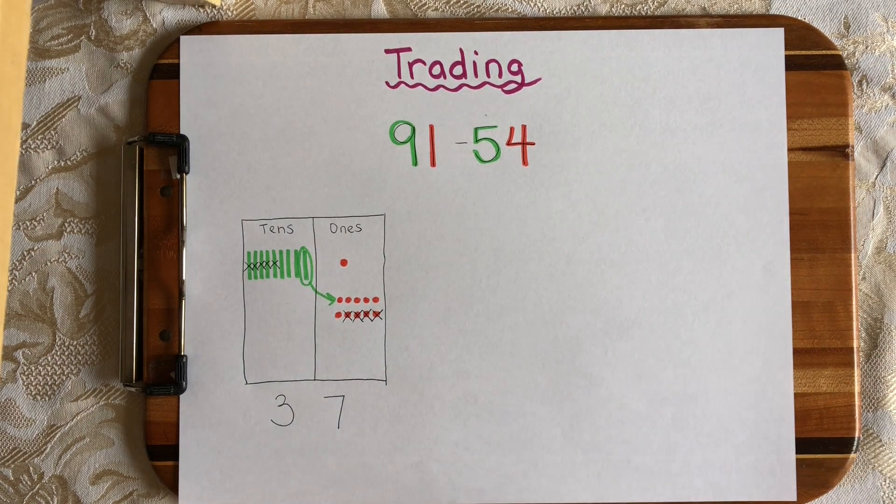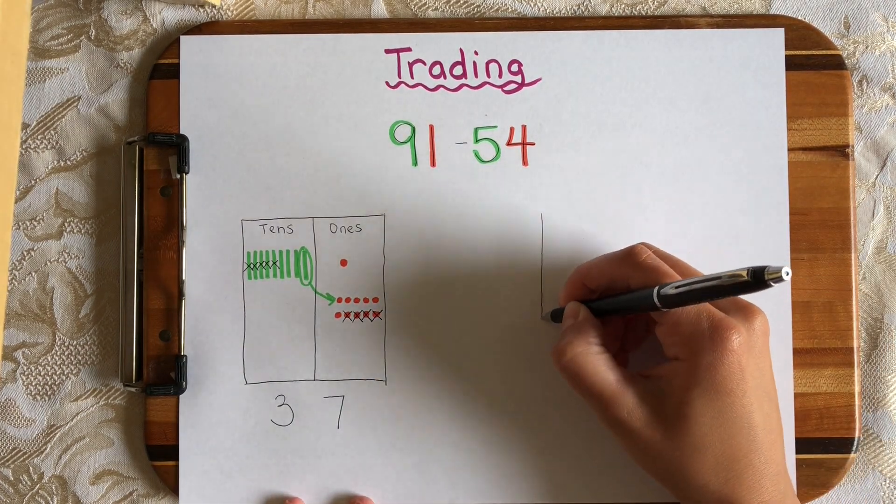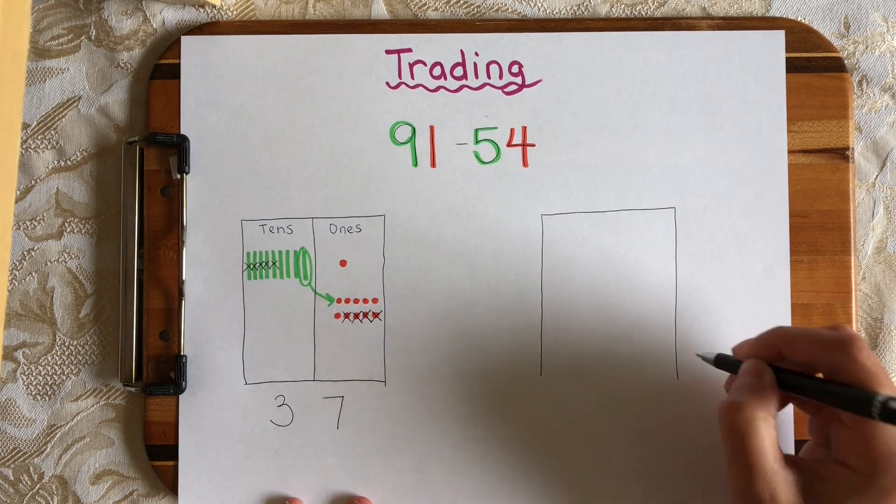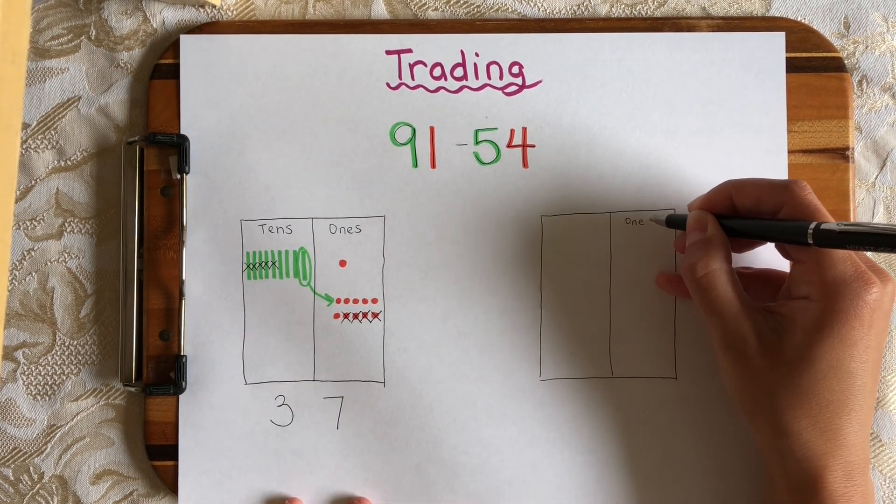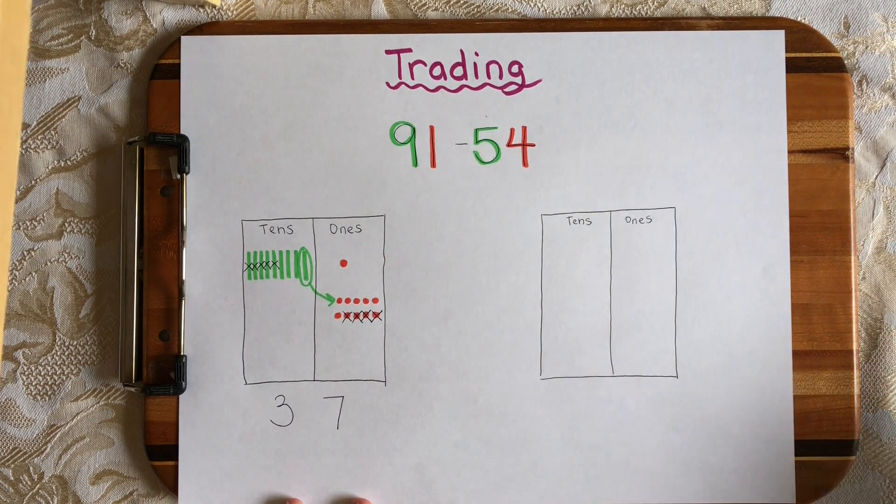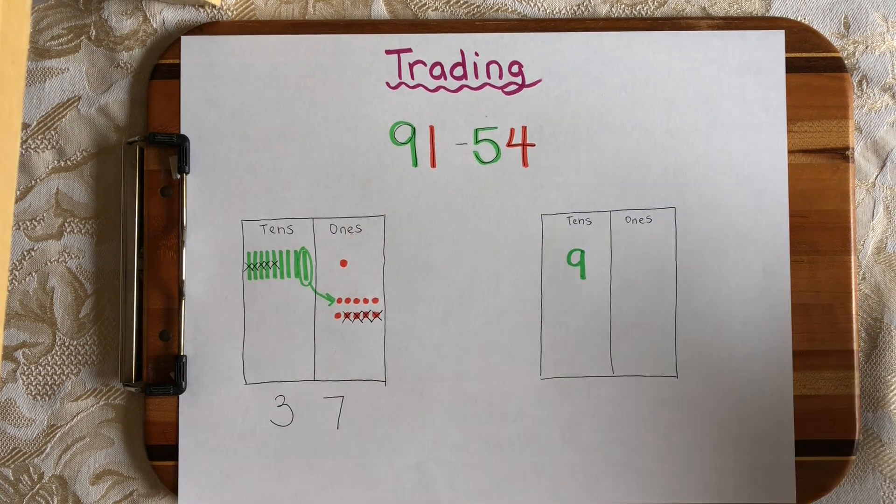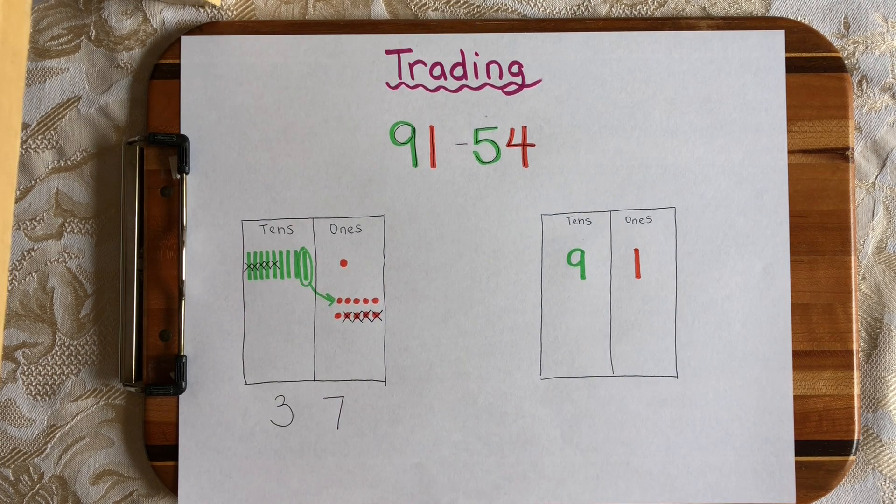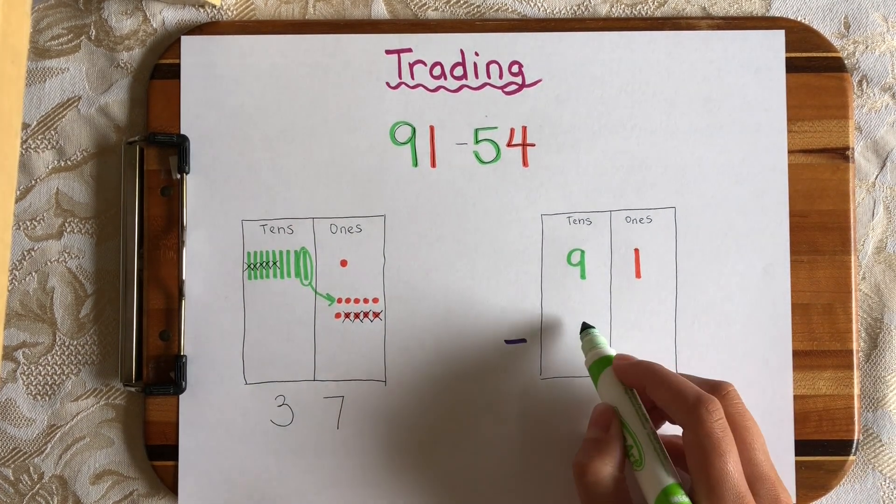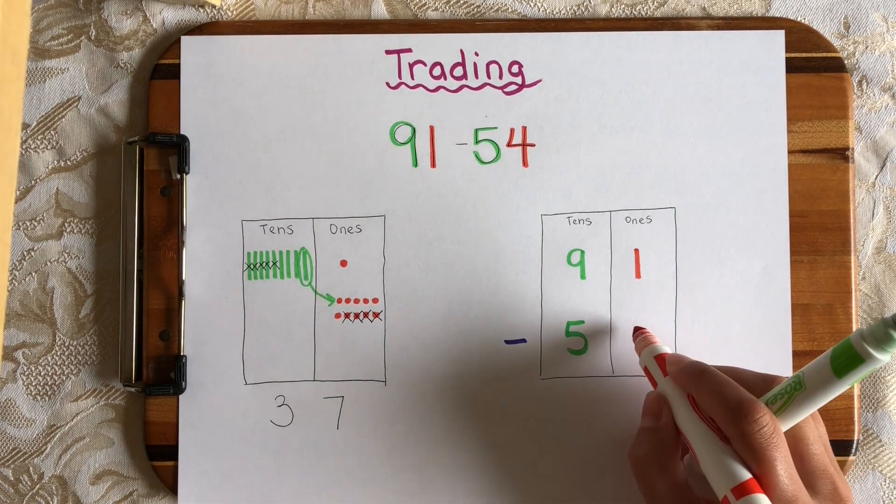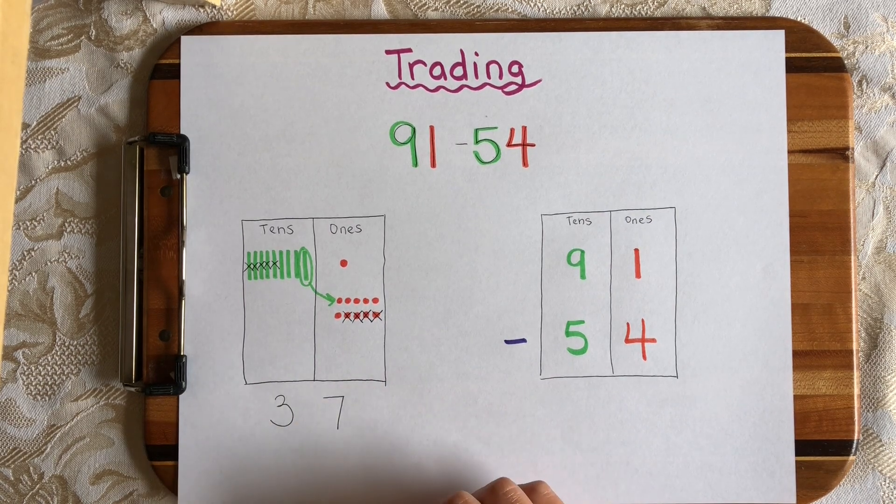Now I'm going to represent 91 minus 54 using numbers instead of the lines and dots. So I'm still going to draw my 10s and 1s house because that will make it easier for us to line up our 10s and 1s. So my 1s will go over here, my 10s will go over here. Let's write in 91 at the top first because it's the bigger number and we need to subtract from the bigger number. And we're going to subtract 54.